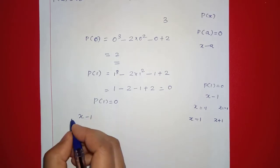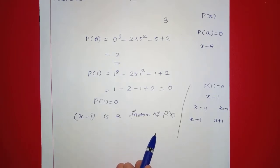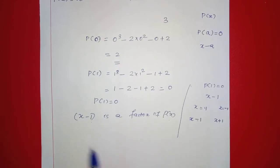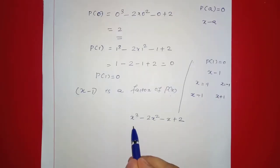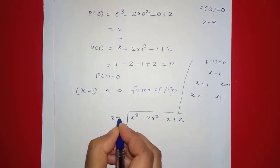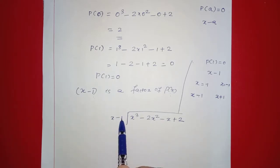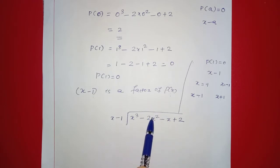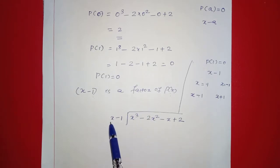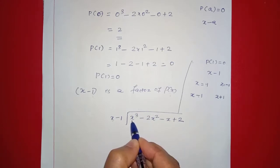Since x minus 1 is a factor of P of x, what we will do now is divide this factor into P of x. P of x equals x raised to 3 minus 2x squared minus x plus 2. We divide this polynomial by x minus 1.